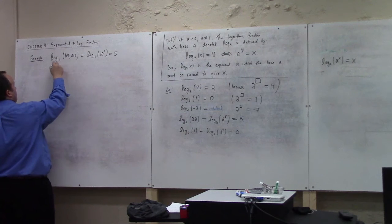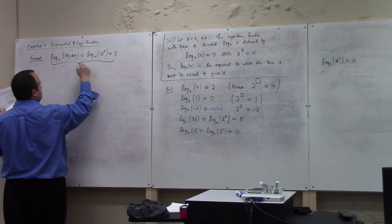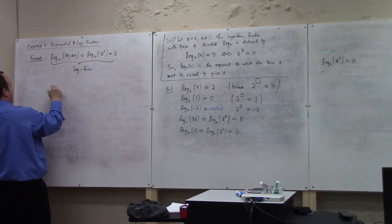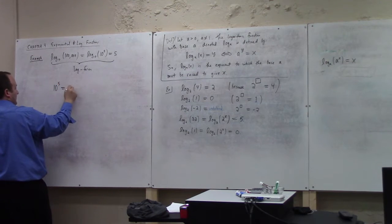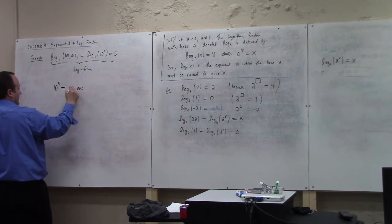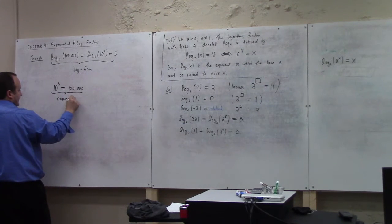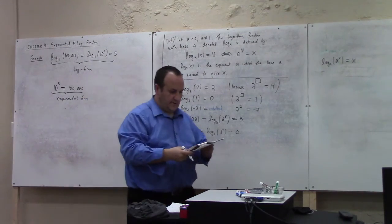This is the logarithmic form. Logarithmic form. In contrast, exponential form would be 10 to the 5 equals 100,000. Exponential form.